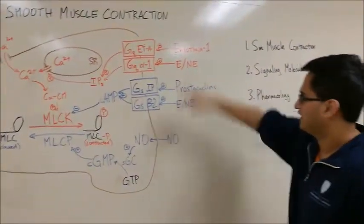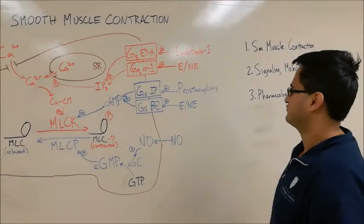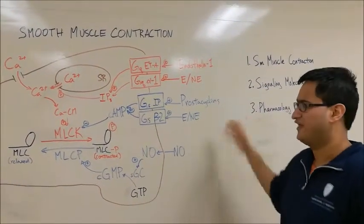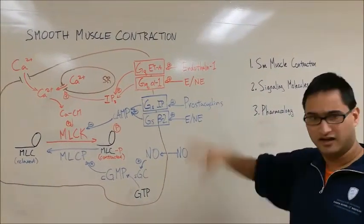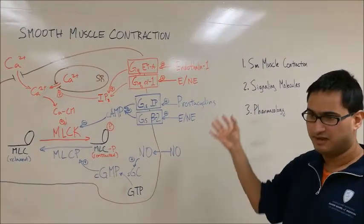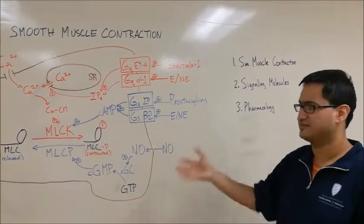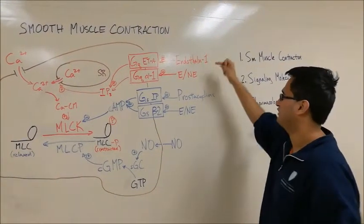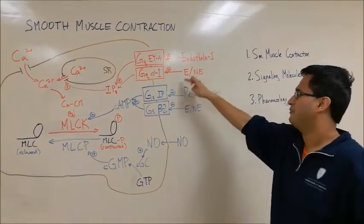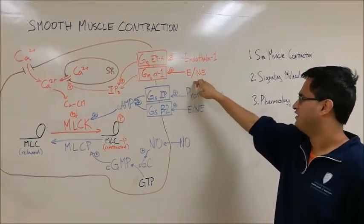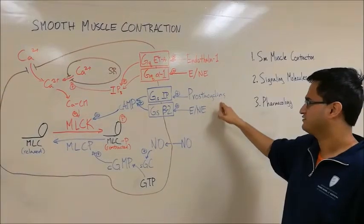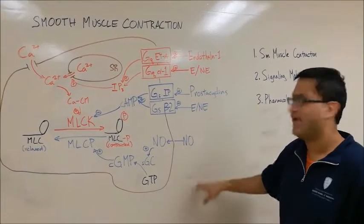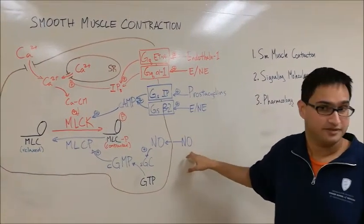On the side of the cell, I've drawn a bunch of receptors and signaling molecules that affect myosin light chain kinase and myosin light chain phosphatase. We have endothelin-1, epinephrine and norepinephrine, prostacyclins, and nitric oxide.